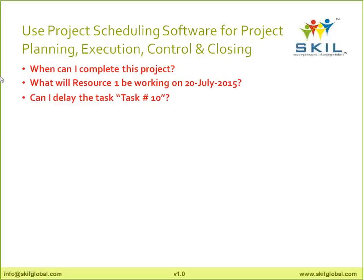Software helps you during execution and control. If someone says the client hasn't reverted on approvals and asks 'Can I delay task 10?', I look at my schedule. If that task is on the critical path, I must escalate: if it delays, the project gets delayed, and I issue a change request for a new project completion baseline. Can I approve leave for Resource 2? I look at the critical path — if he's on it, I can't give three weeks, so I need a replacement or to juggle resources. With software in hand, these questions become answerable.